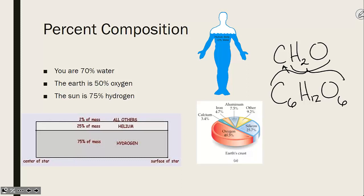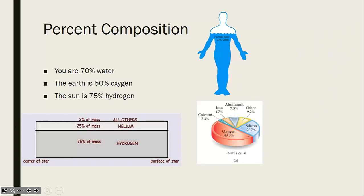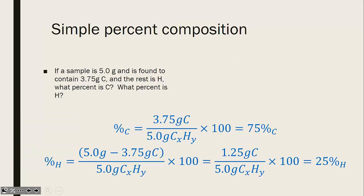Things are broken down based on their composition — this is not a new concept for you. You've heard that you are 70% water. You could break down the earth and say that the earth is 50% oxygen, and the sun is about 75% hydrogen, because we classify things based on what makes them up in chemistry — their percent composition.